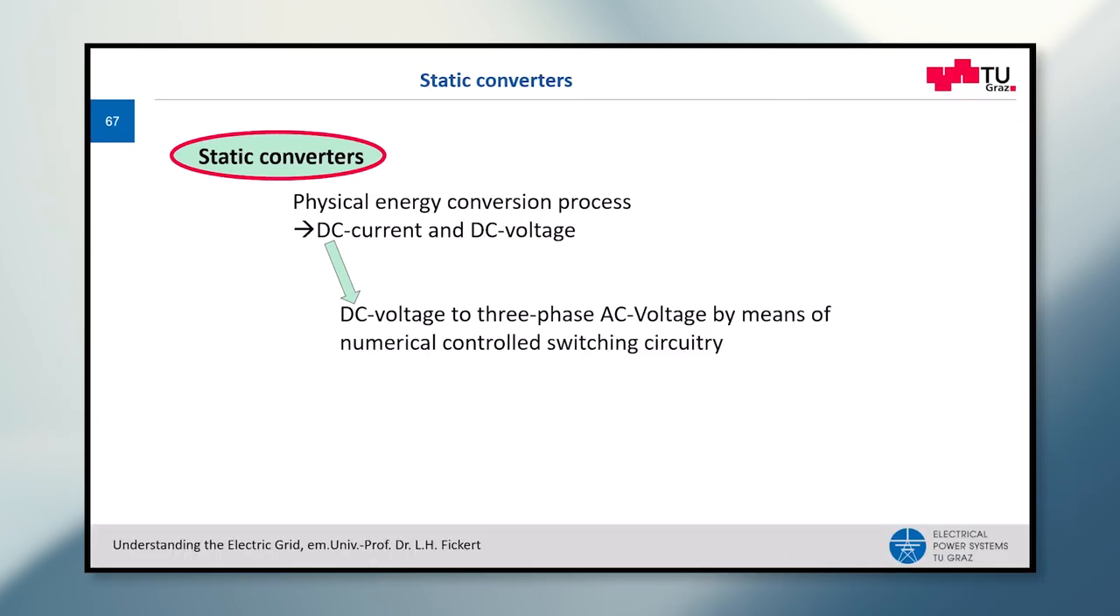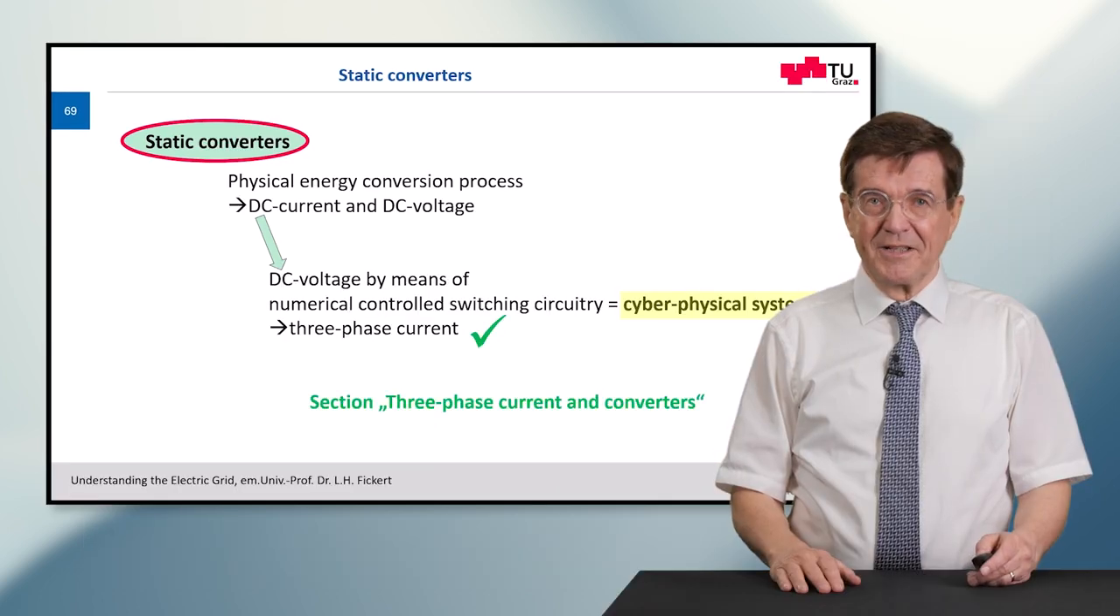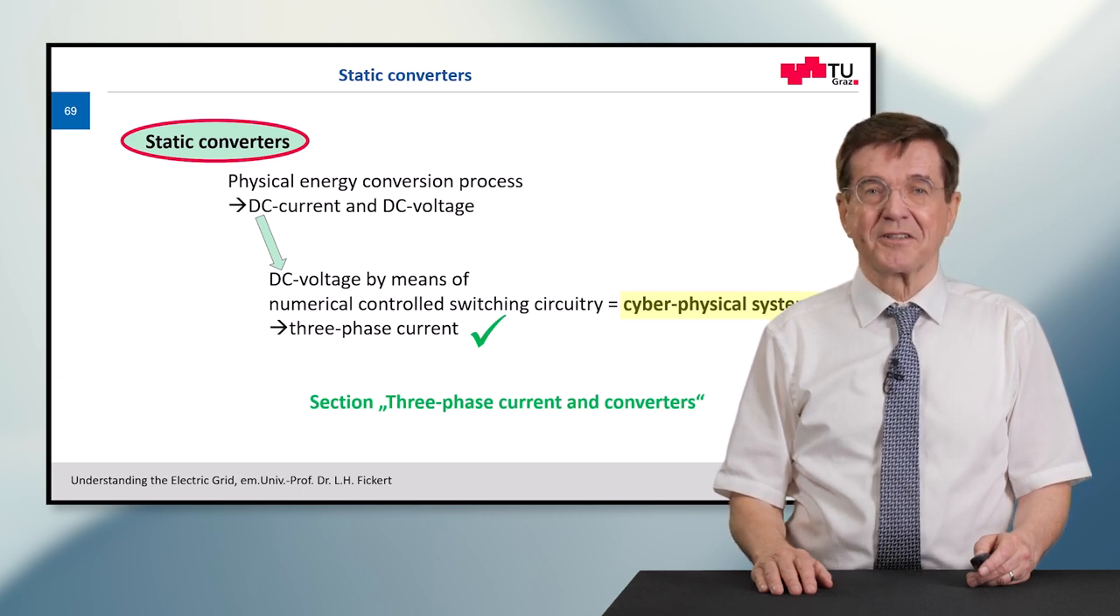These are wind power plants, photovoltaic plants, and fuel cells. In such a static converter, the physical energy starts from the source, which may be photovoltaic, which feeds DC power into this converter process. The DC current and DC voltage are turned into three-phase voltage by means of numerically controlled switching circuitry, which can be classified as cyber-physical systems, and from these we feed three-phase current into the power system. For this, please see section three-phase current on converters of my course.